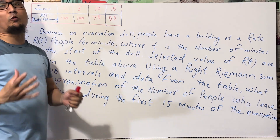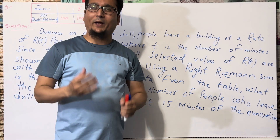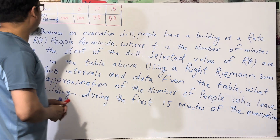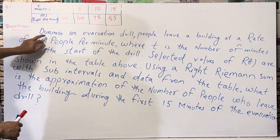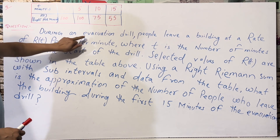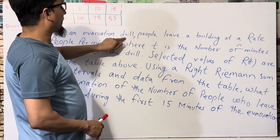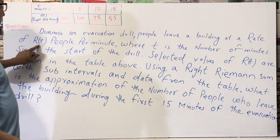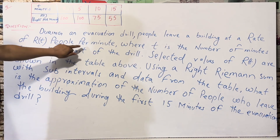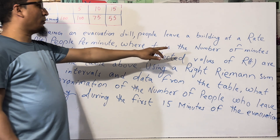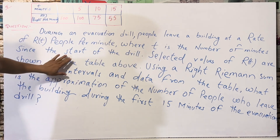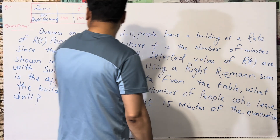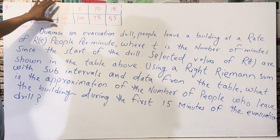Okay, the question is: during an evacuation drill, people leave a building at the rate of R(T) people per minute, where T is the number of minutes since the start of the drill. Selected values of R(T) are given in a table.